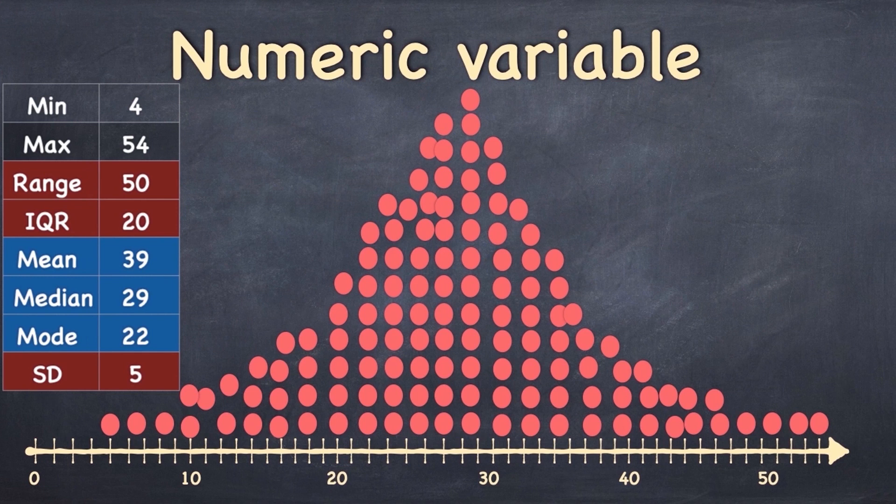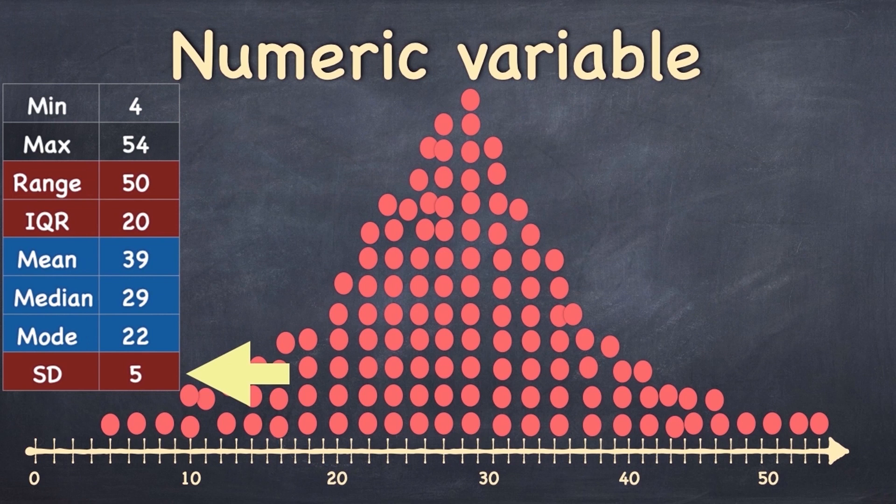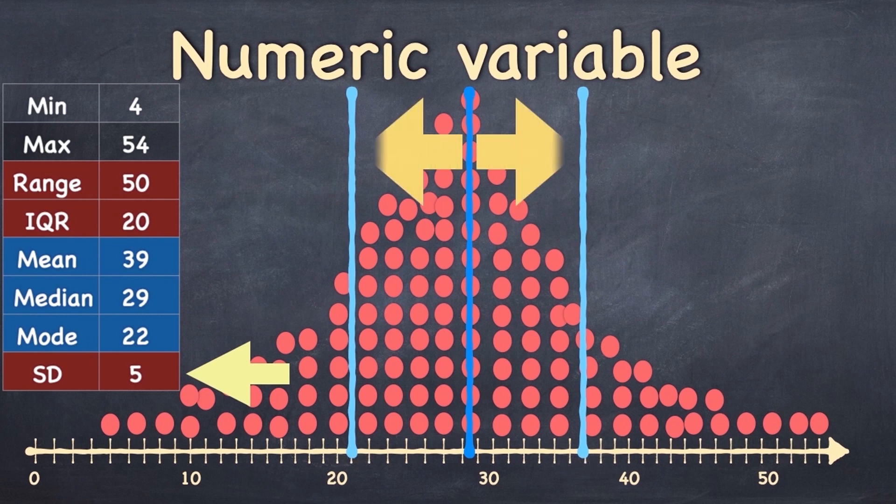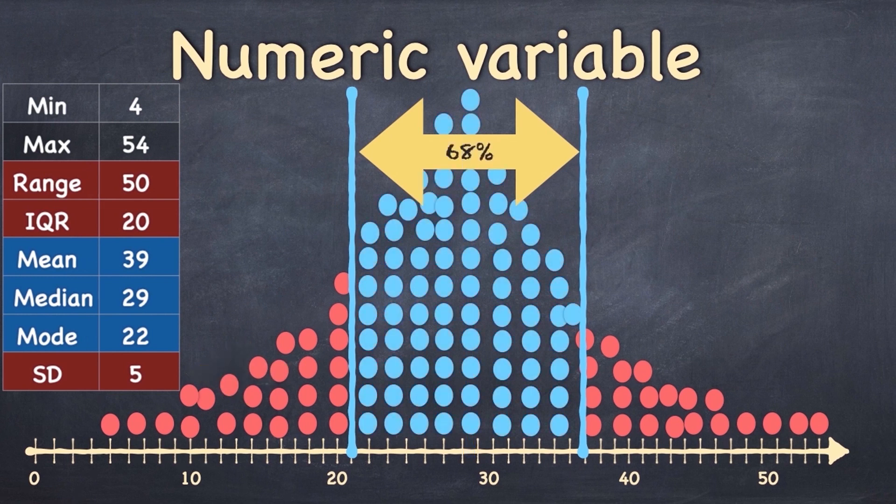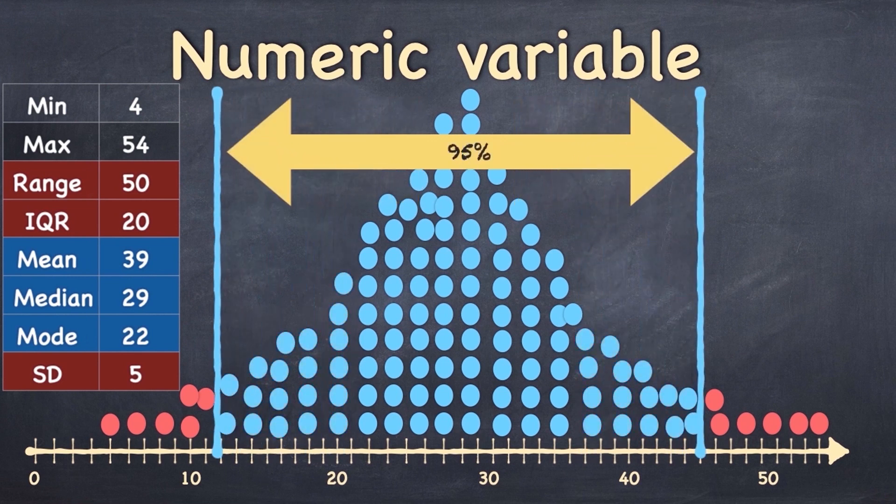And finally, the standard deviation tells us about the average distance from the mean. In other words, how spread out the data is. So if this is the mean, then one standard deviation on either side of that is the average distance of the observations from the mean. And it turns out that if your data is normally distributed like this is, then about 68% of all of the observations will occur within one standard deviation on either side of the mean. And about 95% will be within two standard deviations.